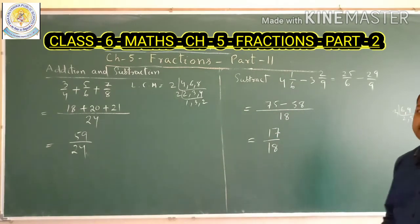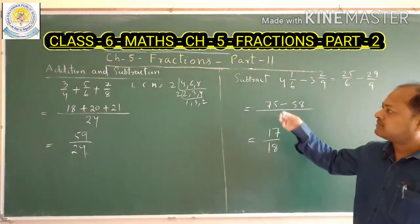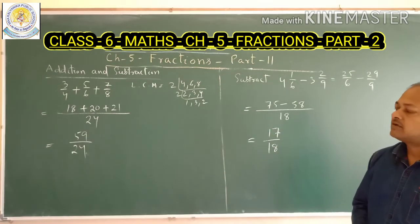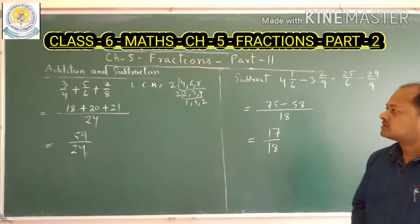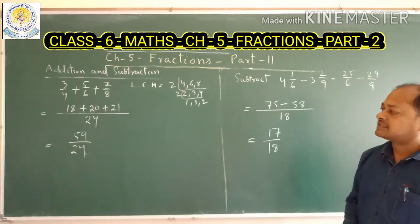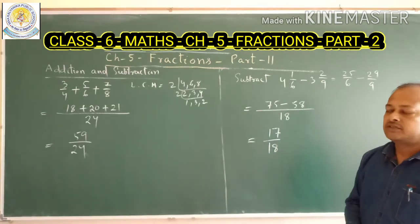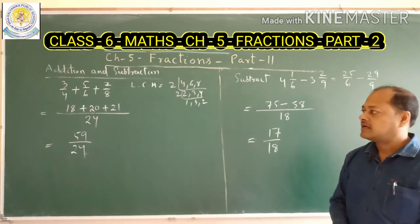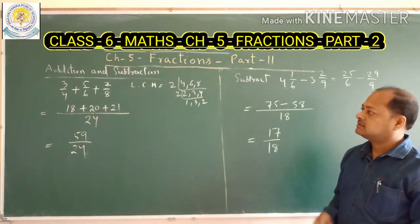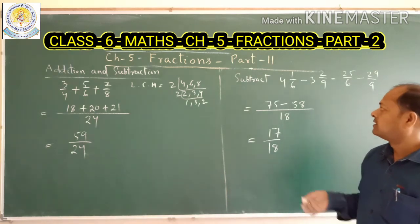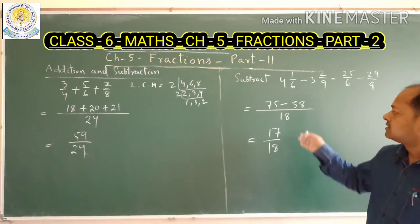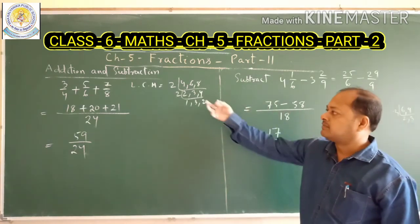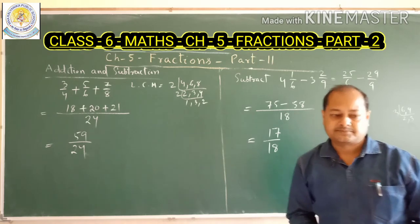So this is the method to solve addition and subtraction of fractions. First, find the LCM if the denominators are not the same. Find the LCM and then apply the normal process: divide the LCM by the denominator and multiply by the numerator.